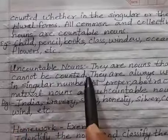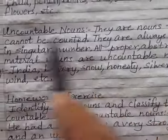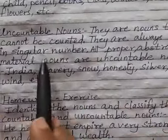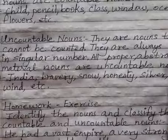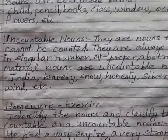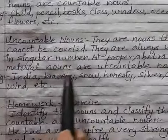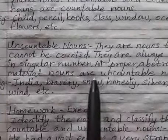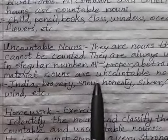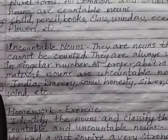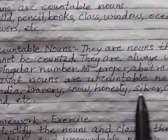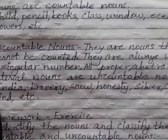Uncountable nouns are nouns that cannot be counted. They are always used in singular number. All proper, abstract, and material nouns are uncountable nouns. Examples include: India, bravery, snow, honesty, silver, copper, winds, and so on.